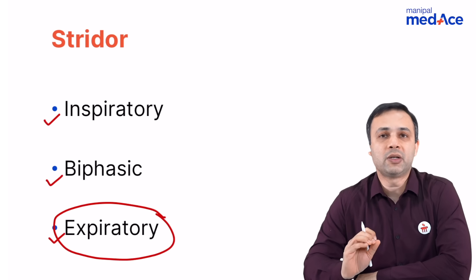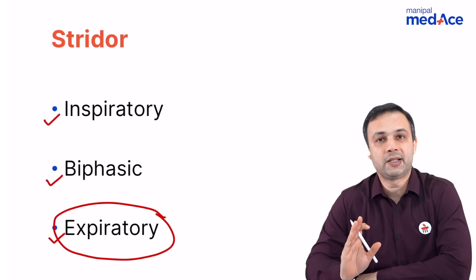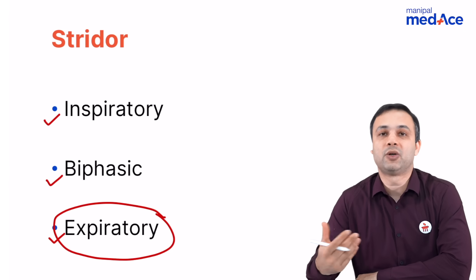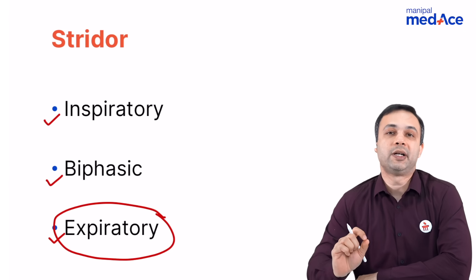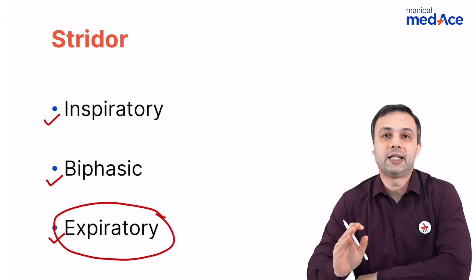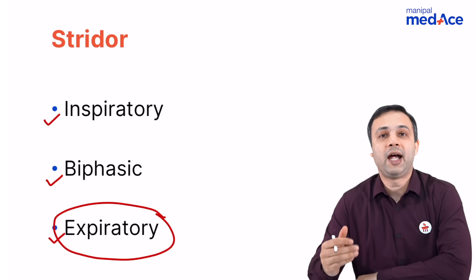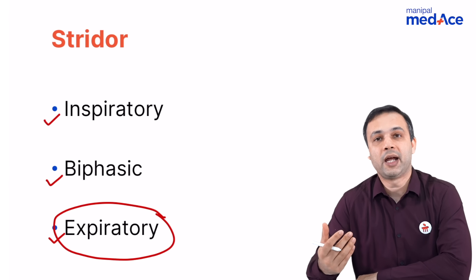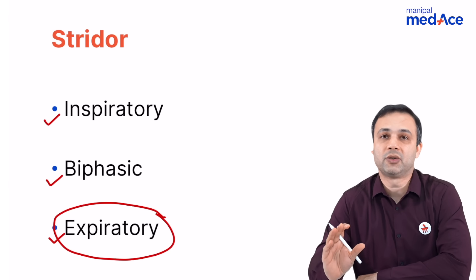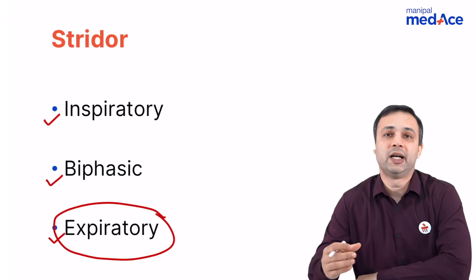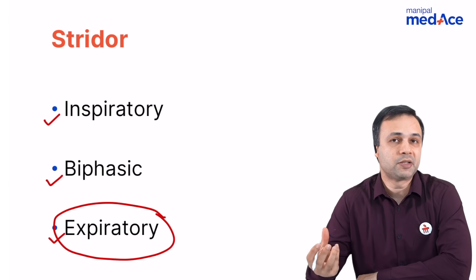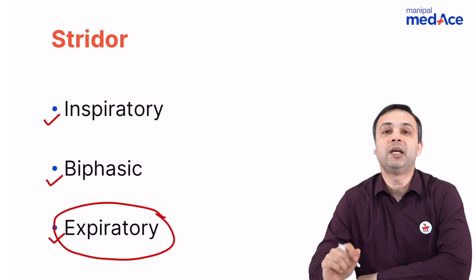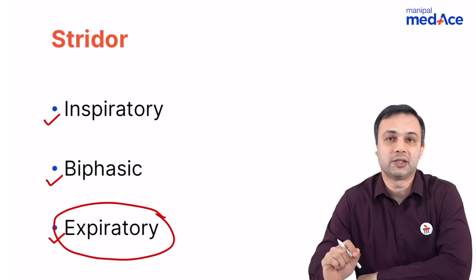What are the common causes of inspiratory stridor? The most common congenital cause of inspiratory stridor is laryngomalacia, and in adults we are looking at malignancy as one of the common causes. It can also be deep neck space infections, and in young children it can be epiglottitis as well.